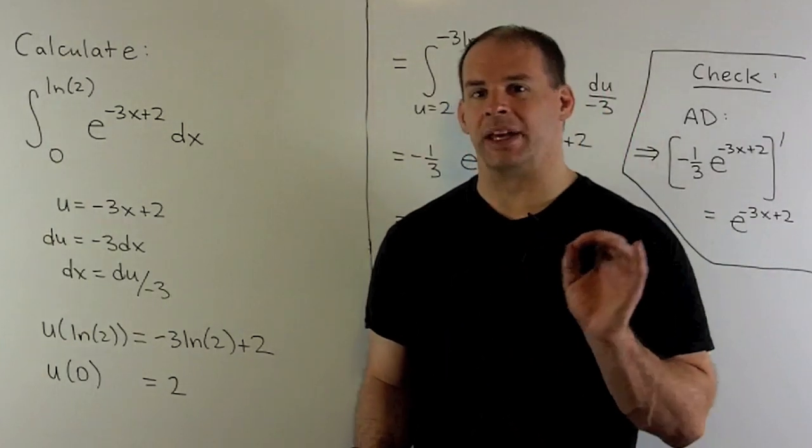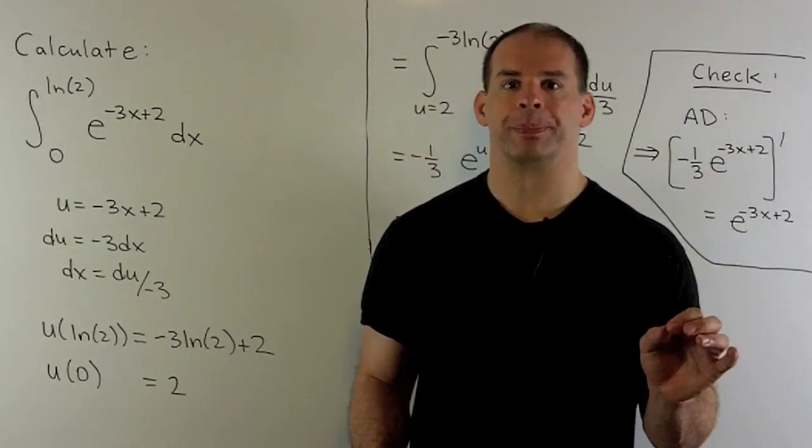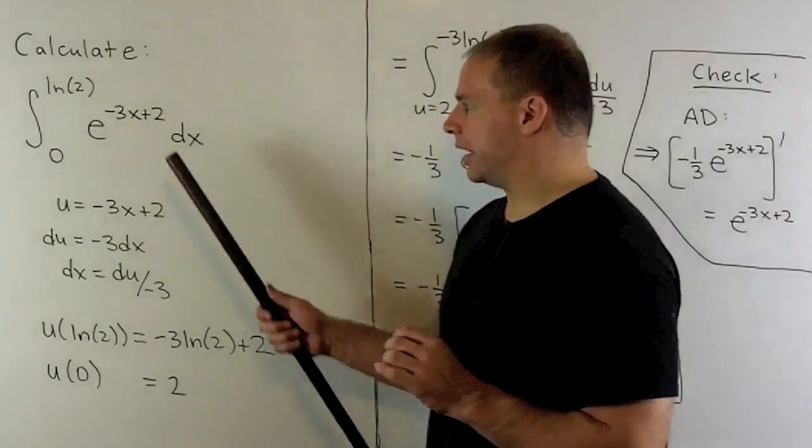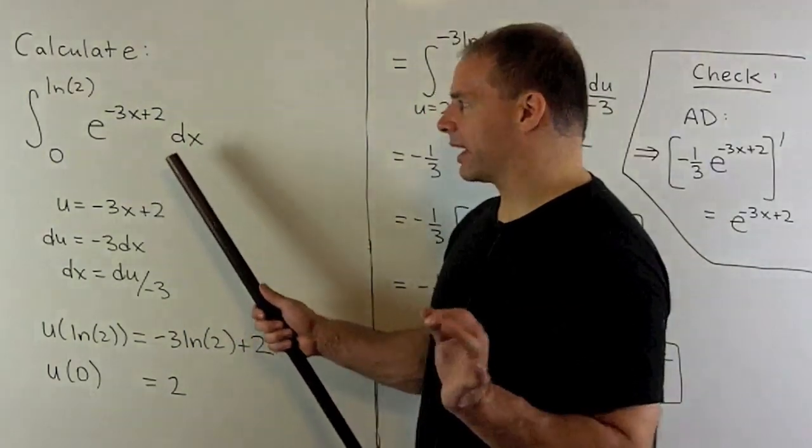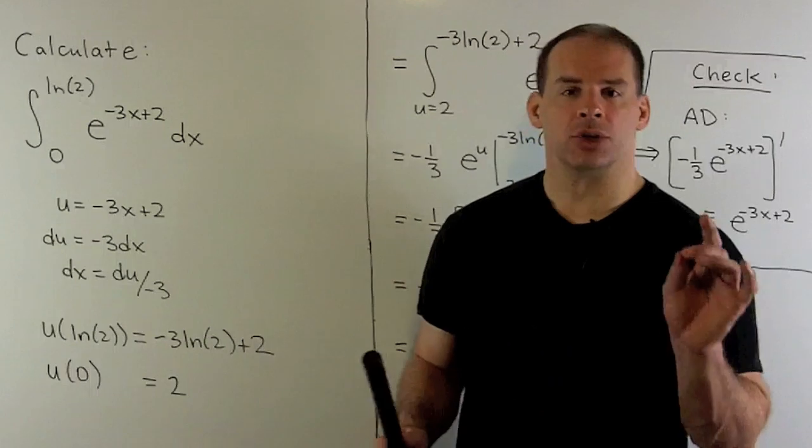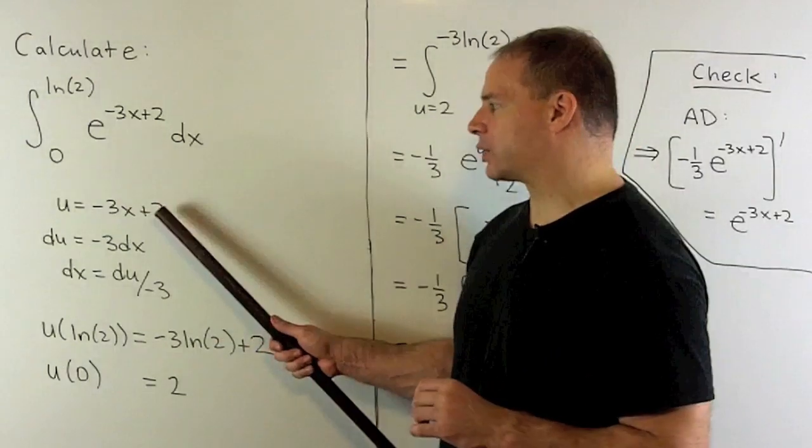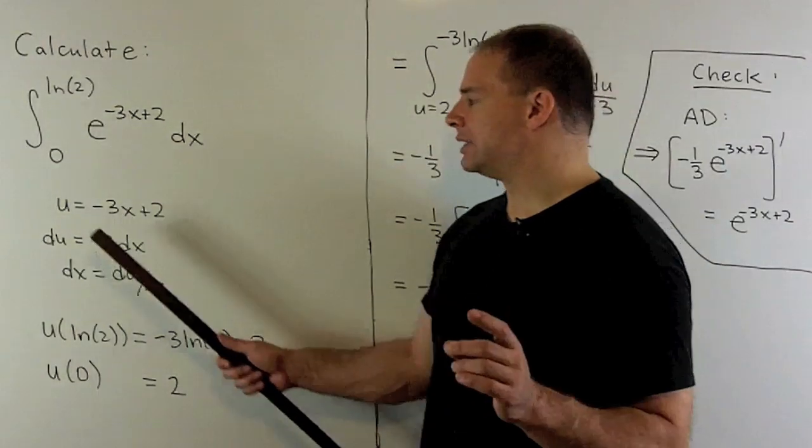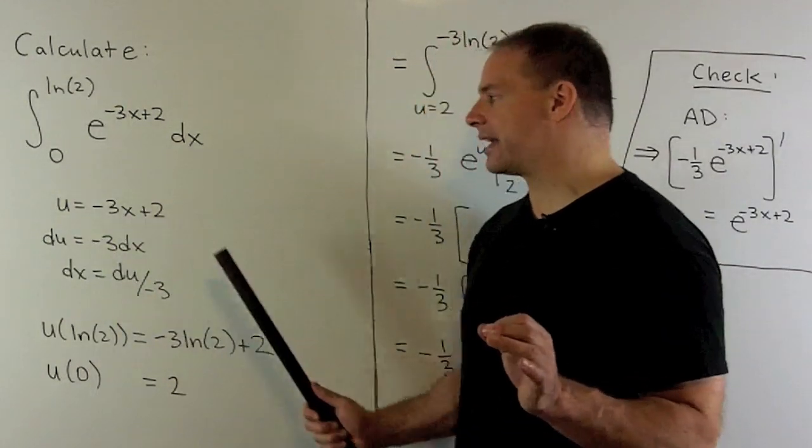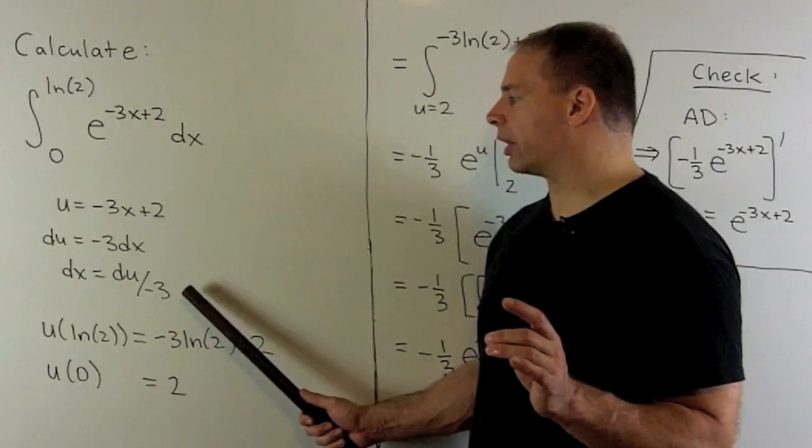Here, the technique is going to be integration by substitution. So take a look at our integrand. We have a composition, so we're going to let u be equal to the inside function. So it's going to be minus 3x plus 2. du equals minus 3 dx. dx equals du over minus 3.